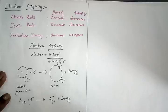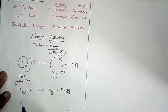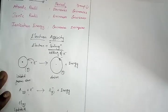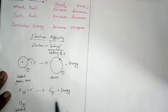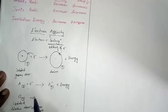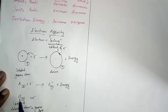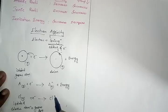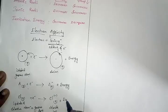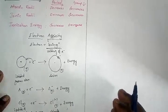For example, take chlorine in gaseous form — an isolated chlorine atom in gaseous form. Chlorine is a non-metal and a halogen; halogens usually have a tendency to gain electrons. The chlorine gains an electron and becomes the chloride ion in gaseous state, and this process releases energy.